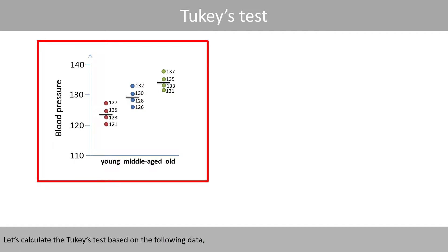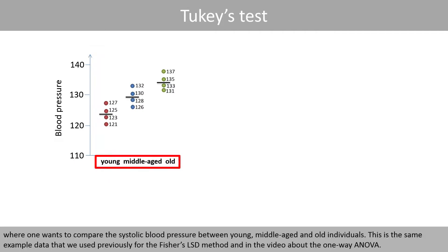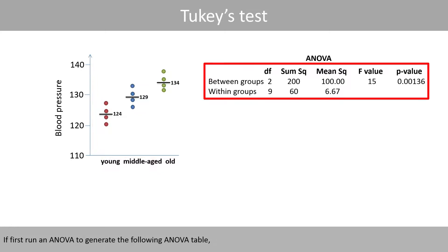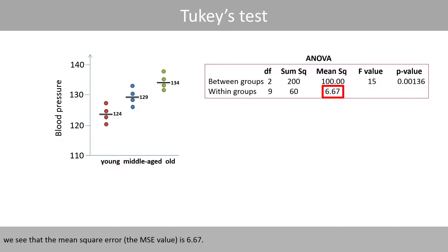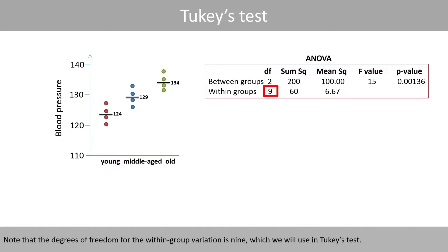Let's calculate Tukey's test based on the following data, where we compare systolic blood pressure between young, middle-aged, and old individuals. This is the same example data used previously for Fischer's LSD method and in the video about one-way ANOVA. If we first run an ANOVA to generate the ANOVA table, we see that the mean square error (MSE) is 6.67. Note that the degrees of freedom for the within-group variation is 9, which we will use in Tukey's test.